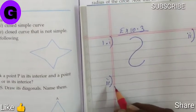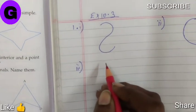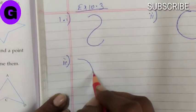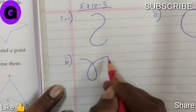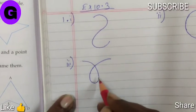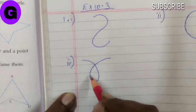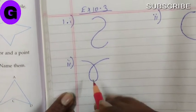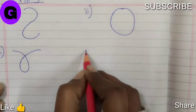Sub part 3, open curve that is not simple. So open curve means which have a different starting and the ending point. And why not simple? Because here they are crossing each other. So this is open curve that is not simple.